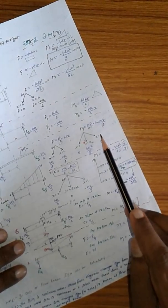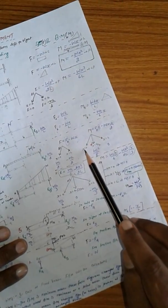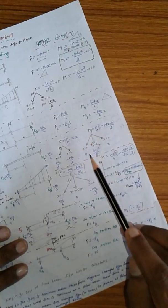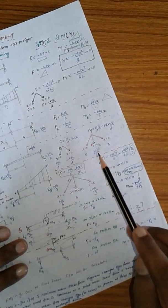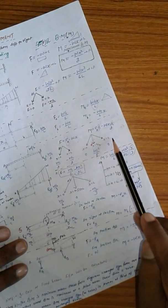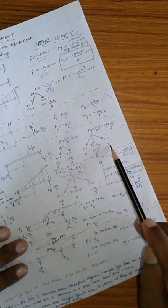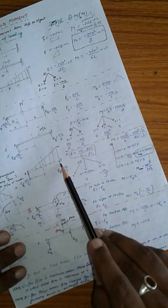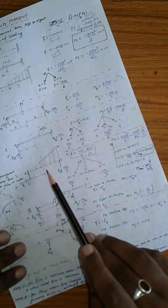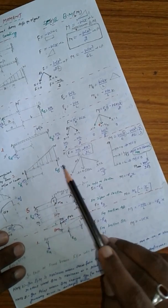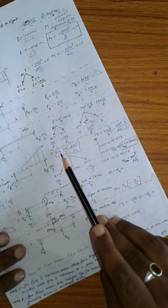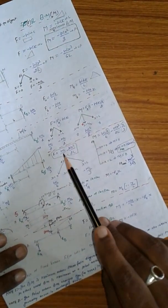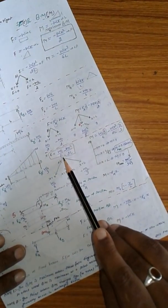At x equal to 0, Mx is 0. At x equal to L by 2, Mmax. And at x equal to L, Mb is 0. Now third case, UVL, uniform varying load at simply supported beam.